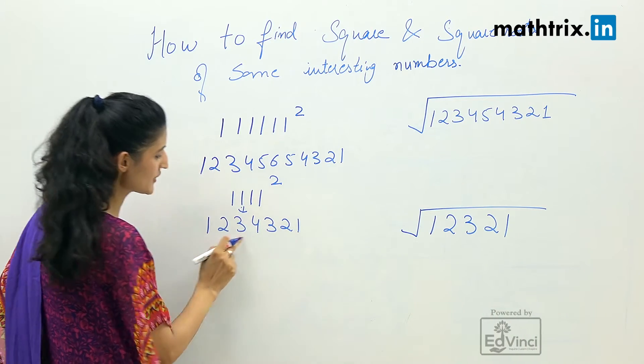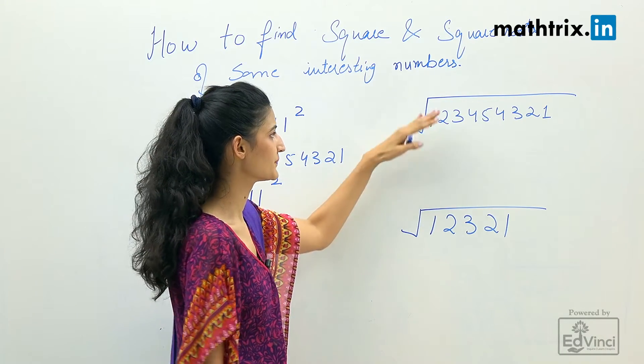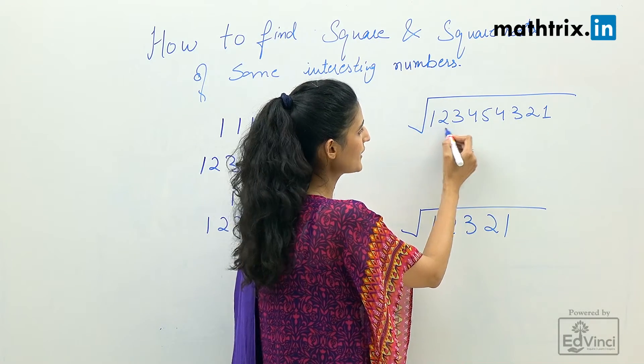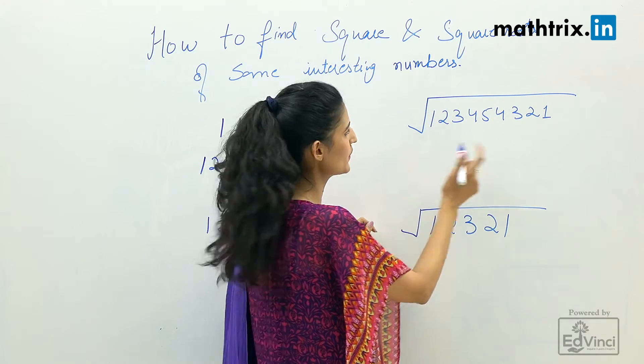We'll start from one, two, three, and we'll go till four. Then we'll start descending. So the answer is one, two, three, four, three, two, one. Now let's take this example. It's again very simple, like one, two, three, four, five, four, three, two, one.